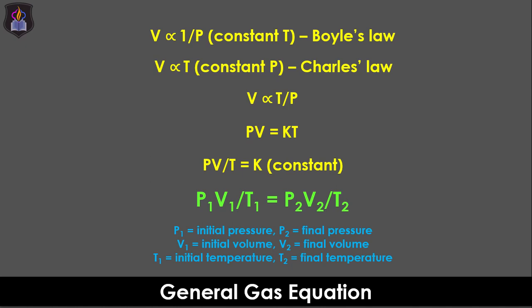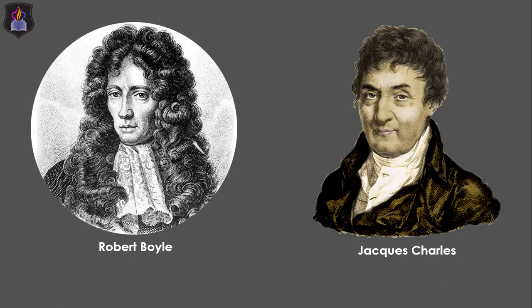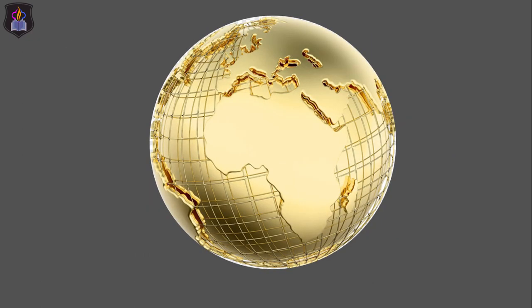Before we see how to apply the general gas equation, let's learn about a new concept. According to Robert Boyle and Jacques Charles, the volume of a gas changes remarkably when there are changes in temperature and pressure. So if two scientists in two different places — a temperate region with low temperatures and a tropical region with high temperatures — were to carry out studies on a particular gas, their gas volumes will vary widely because of the temperature differences between the two regions.